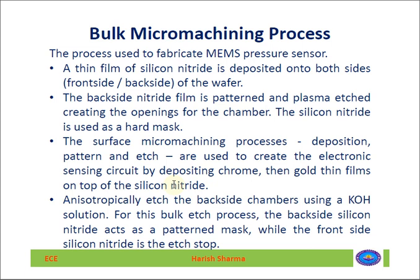Anisotropic etching takes place at the backside of the chamber using KOH solution — potassium hydroxide. For this bulk process, the backside silicon nitride acts as a pattern mask while the front side silicon nitride is the etch stop. We are using potassium hydroxide solution and doing anisotropic etching. Anisotropic etching means a particular crystal structure orientation will be dissolved or etched only. Two etching processes exist: isotropic etching, which is independent of crystal orientation, and anisotropic etching, which is crystal orientation dependent.